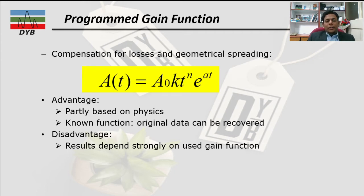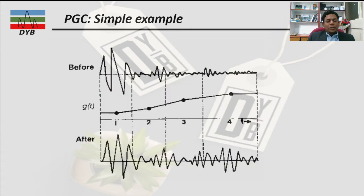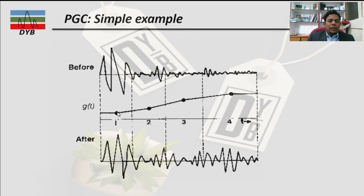Some disadvantages exist but are not extensive. Results depend strongly on how you design your gain function, since it is a programmable gain function. Here is a simple example of PGC. At the top you can see the input signal trace. Once we apply the gain function G(t), which is based on time, the programmable gain function is defined according to requirement. Where amplitude is higher, you need less amplification; where amplitude decays, you define higher amplification. After convolving, the output after PGC amplification is shown.